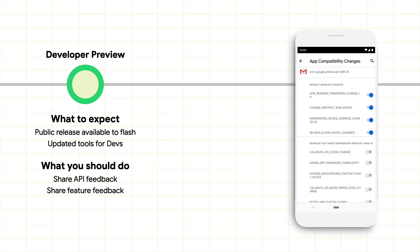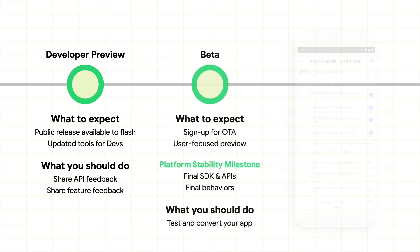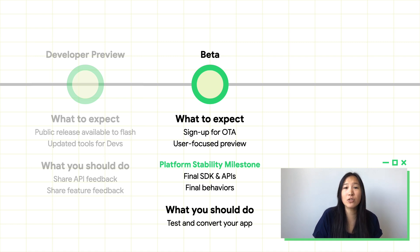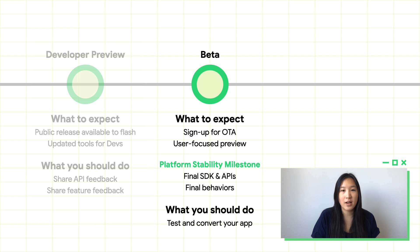We've actively adjusted APIs and feature design based on what we've heard, so thanks. The next phase is a set of betas, which started in June. Beta is when usage grows dramatically — this all means lots of users. That's why, by beta, you should test and convert your app. Make sure it's working and fully functional, and adopt any new features.